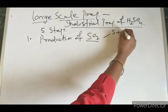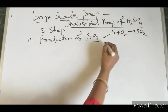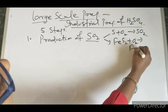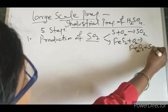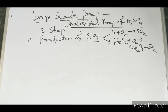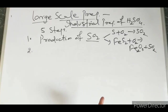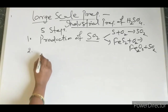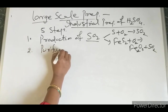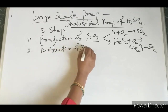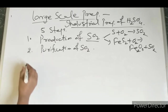First, sulfur burning in oxygen can give rise to sulfur dioxide. Alternatively, iron pyrite burned with oxygen gives rise to Fe2O3 along with sulfur dioxide. Once SO2 is obtained, it must be purified — so the second step is the purification of SO2.